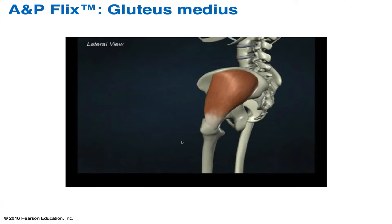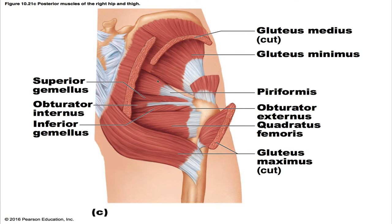Moving on to the lateral rotators, the first is the piriformis — a pyramidal muscle on the posterior aspect of the hip joint, inferior to the gluteus minimus, issuing from the pelvis via the greater sciatic notch. Its origin is the anterolateral surface of the sacrum opposite the greater sciatic notch, and its insertion is the superior border of the greater trochanter of the femur. Its actions rotate and extend the thighs laterally; because it inserts above the head of the femur, it can also assist in abduction when the hip is flexed, and it helps stabilize the hip joint. It's innervated by the first and second sacral nerves and the fifth lumbar nerve.